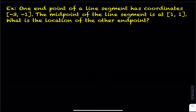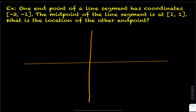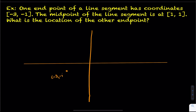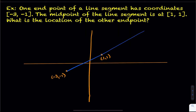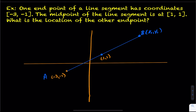Let's look at this next example — it's a twist on the formula. One endpoint of a line segment has coordinates (-3, -1). Let's sketch that out. They also say the midpoint of the line segment is (1, 1). So they're flipping it: they gave you one endpoint and the midpoint, and they want you to find the other endpoint.